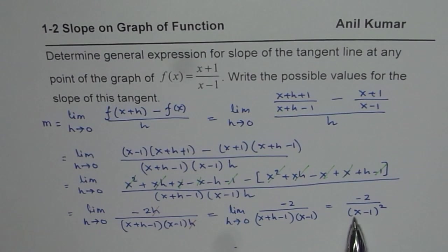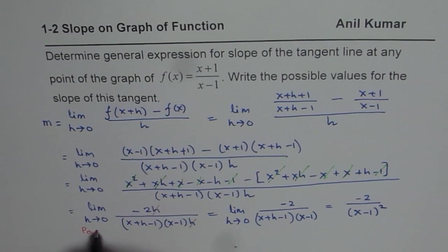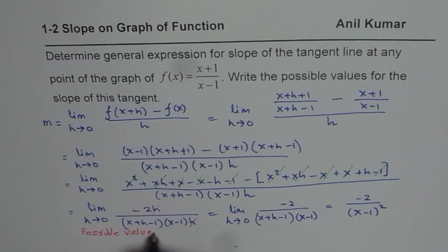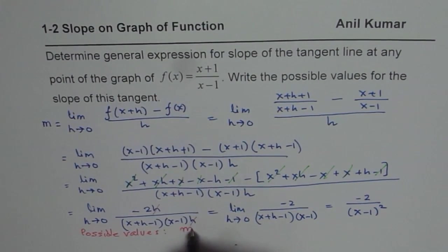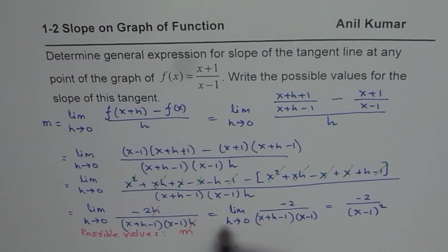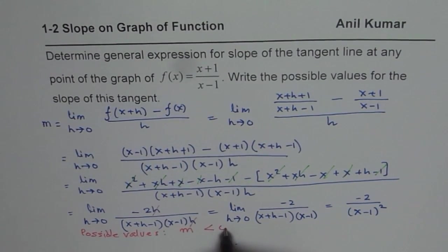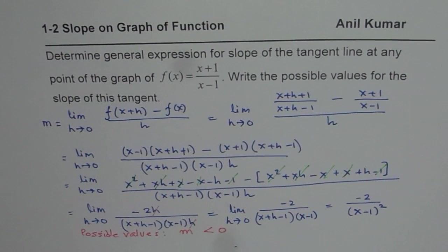It is always negative. And if x is very large, it approaches 0, but it is never 0. So the possible values: it is always negative. So we can write possible values are that the tangent slope m is always less than 0. Always less than 0, never equal to 0.